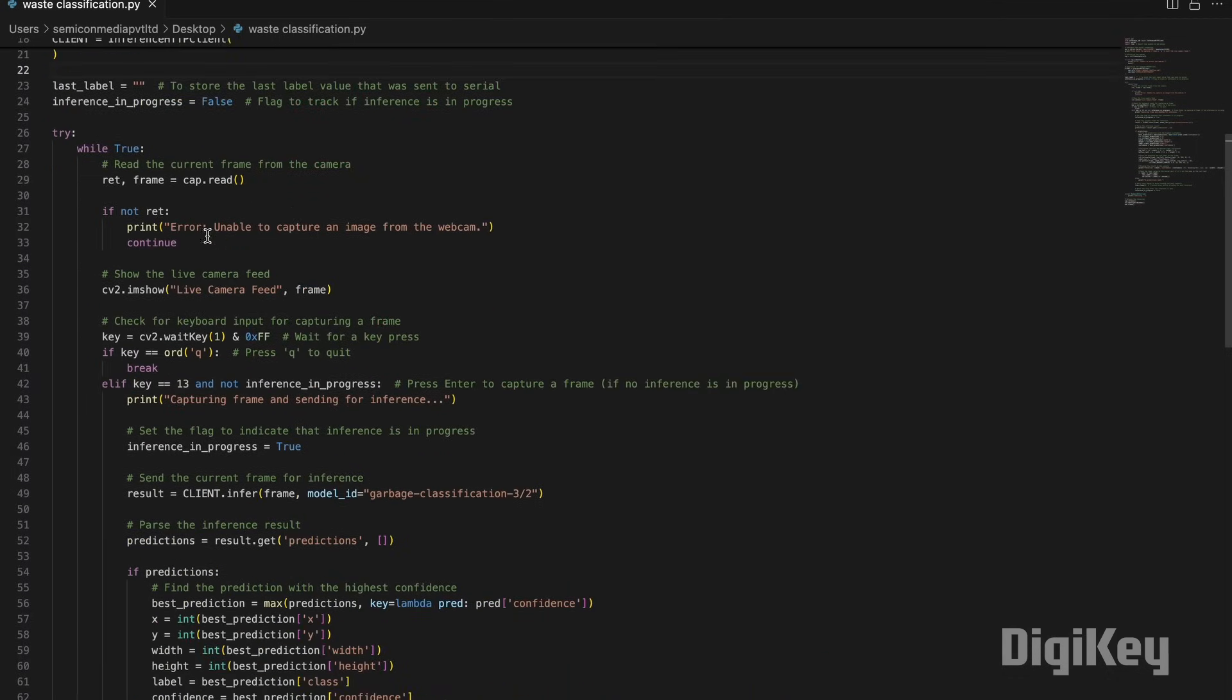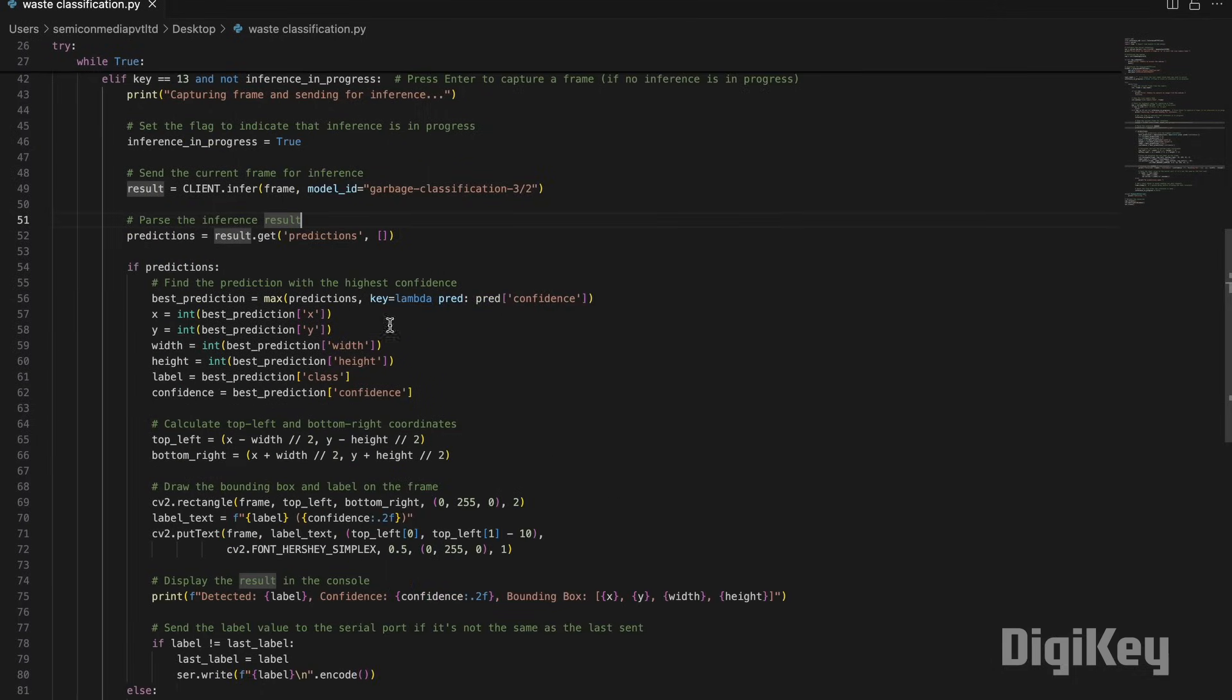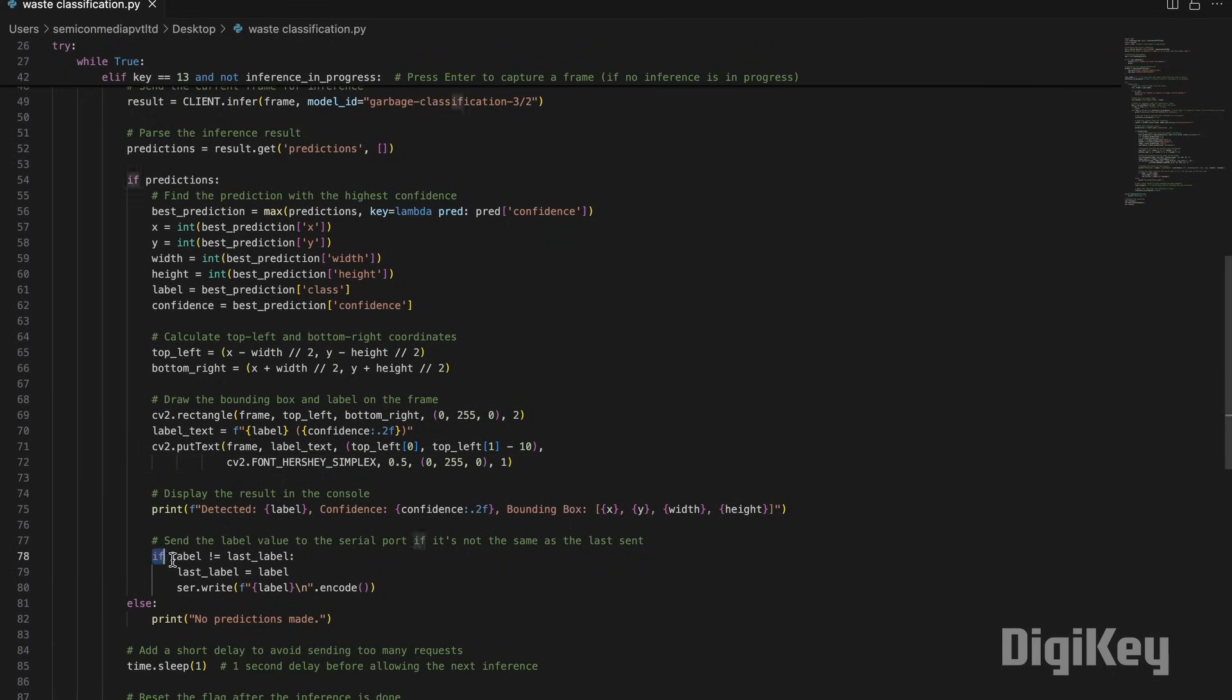In the while loop, the script will capture the image and will send it to the RoboFlow for classification. When the response is received from the RoboFlow, the script will decode the response and will display the results. If a valid label is received, the script will send it to the controller board using the serial port, and the rest will be handled by the controller board.